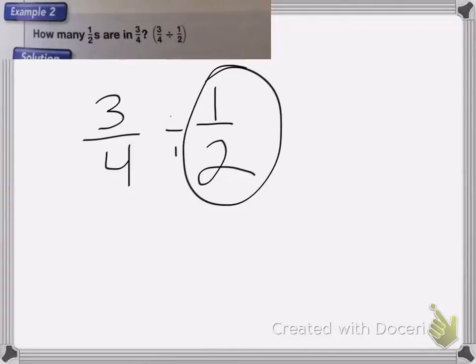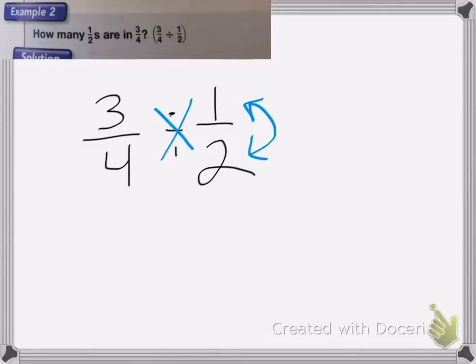And the trick we learned is that to find the reciprocal, I only need to flip these two numbers, and then to figure out how many 1 halves are in 3 fourths, I would then multiply the reciprocal by my first fraction.